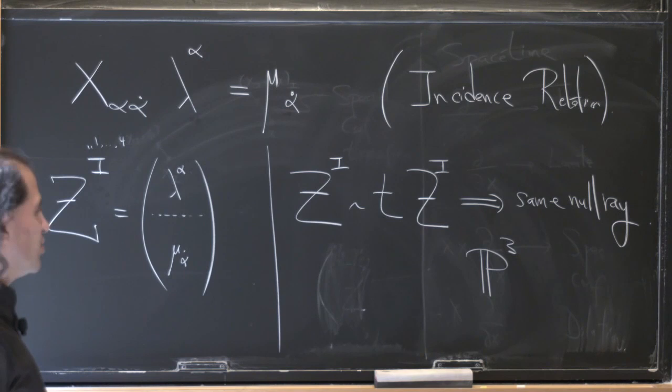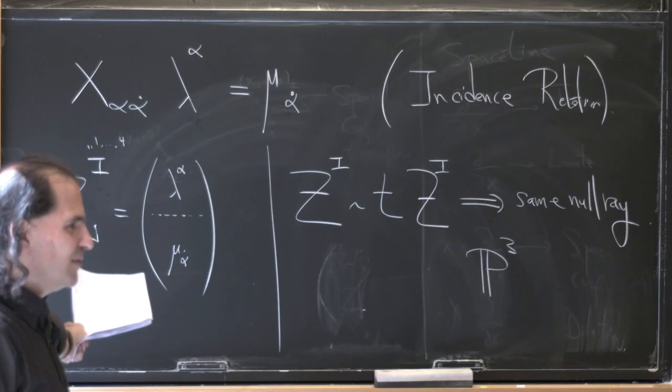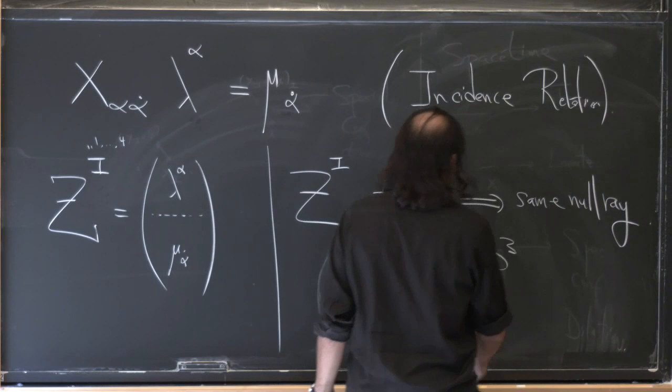Just to say again — when everything is real, if it's RP3, we're going to be dealing with two-comma-two signature. Just like when the lambdas and lambda-tildes were real, we're dealing with two-two signature. Or we could deal with everything complex, in which case there's no signature choice at all — everything is just complex.